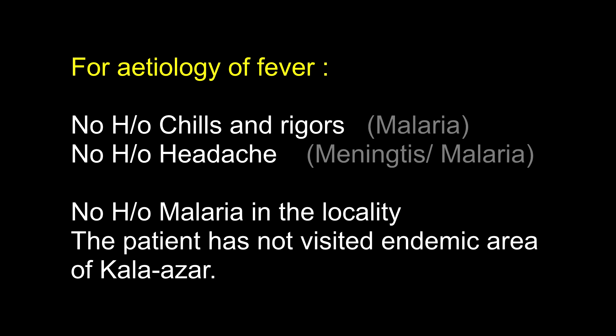Regarding history of etiology of the fever, there is no history of chills and rigors. In which fevers do you get chills and rigors? Malaria, filariasis, urinary tract infections, cholangitis and any abscess in the body, especially liver abscess, either amoebic or pyogenic.